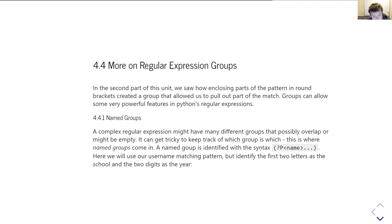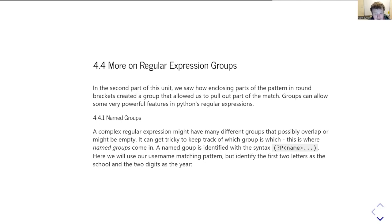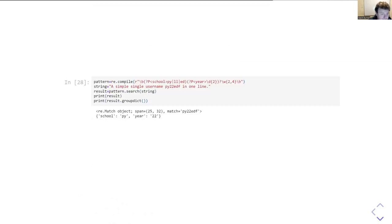The syntax for this — and indeed the syntax for a lot of these more advanced uses of match groups — is that immediately after the open round bracket you put a question mark, and then there's a code that says how to interpret this more advanced syntax of the group. To name the group, you go: open bracket, question mark, then a capital P (which I guess stands for parameter), and then in greater-than and less-than signs you put the name you want to attach to this particular matching group.